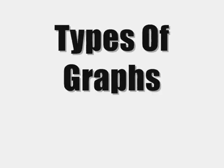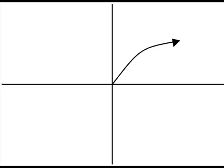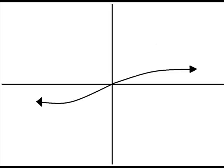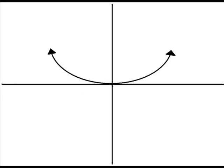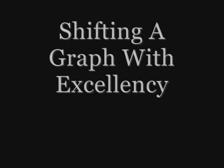Hi, I'm Matthew Salenga here, reporting live on Shifting, Reflecting, and Stretching Graphs. Graphs can be shown as the following: f(x) is equal to absolute value of x; f(x) is equal to square root of x; f(x) is equal to cube root of x; f(x) is equal to x squared; f(x) is equal to x cubed.